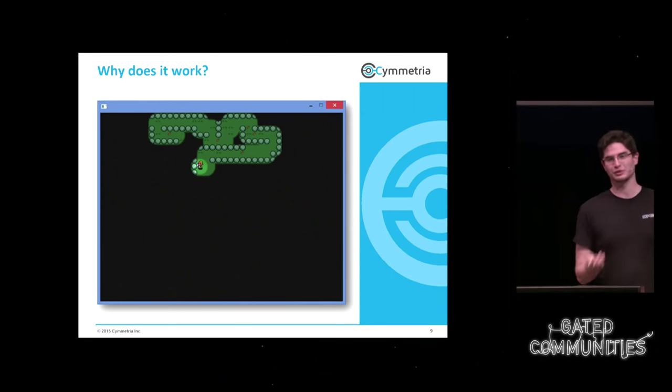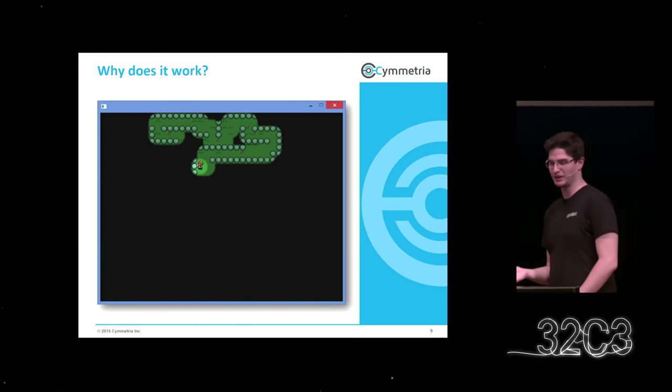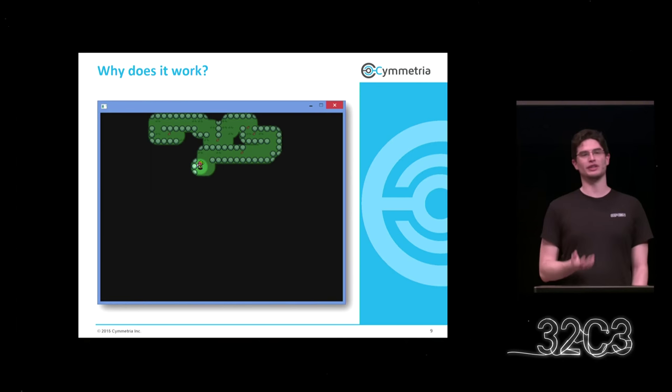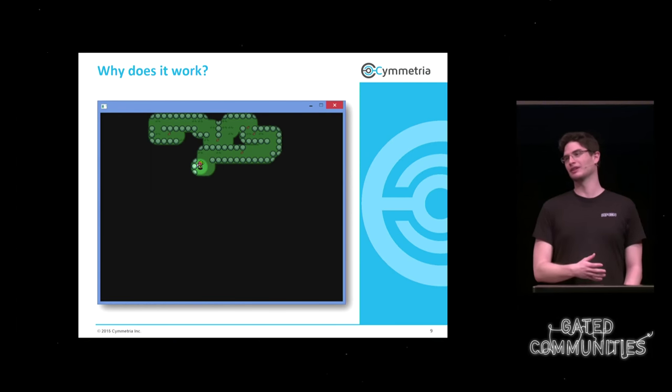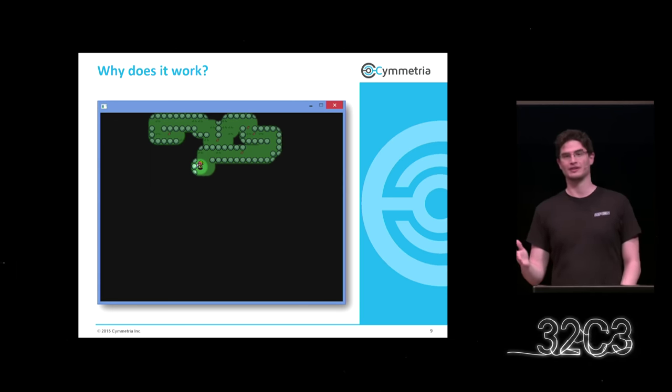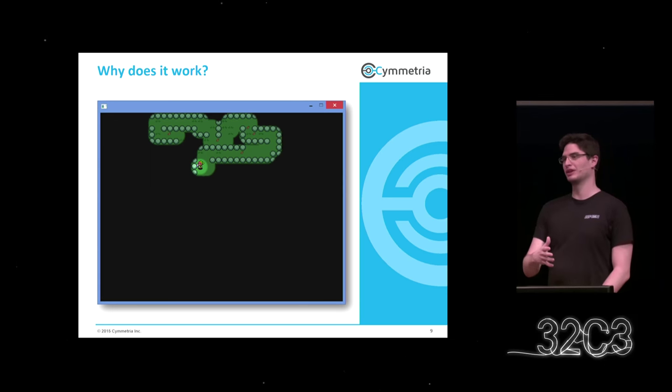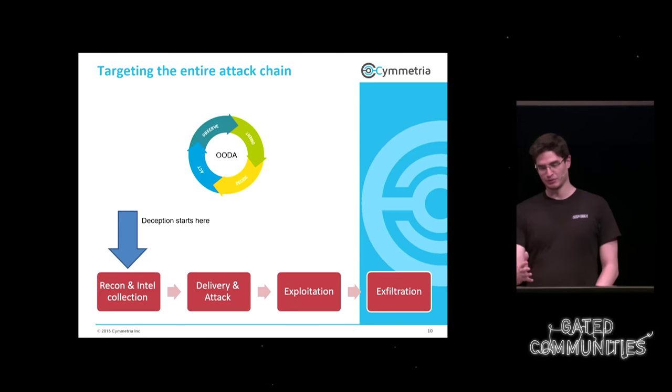Angreifer haben immer eine sehr spezielle Methode, wie sie sich im Netzwerk bewegen und wie sie Authentifizierungs-Credentials bekommen können. Das sind Sachen, die man sehr schwer auf andere Weise herausfinden kann. Ein Angreifer hat einen Pfad: er hat das Netzwerk infiltriert und will zu den Informationen kommen, die ihn interessieren. Der Verteidiger kennt sein Netzwerk viel besser als der Angreifer – warum nutzen wir diesen Vorteil nicht?